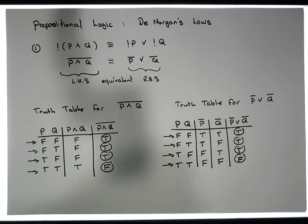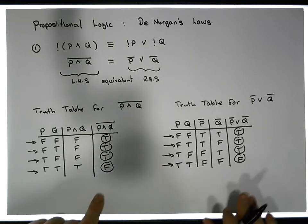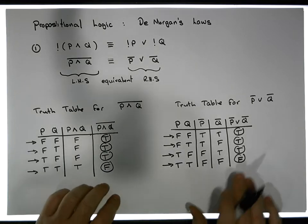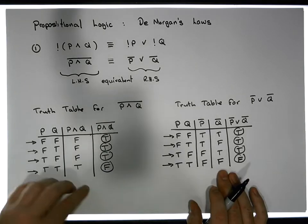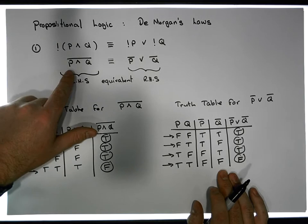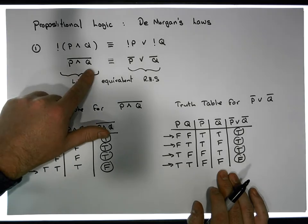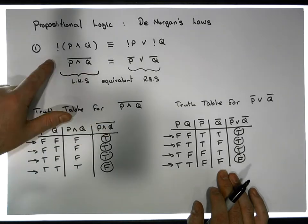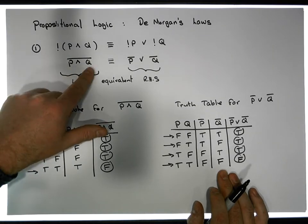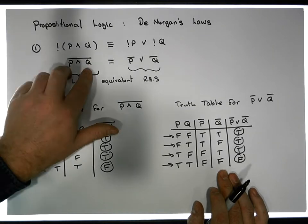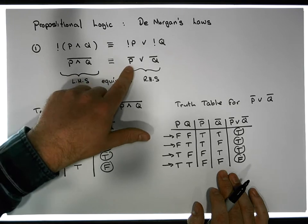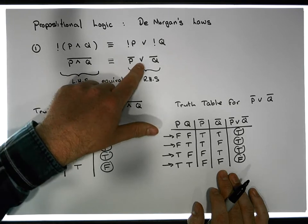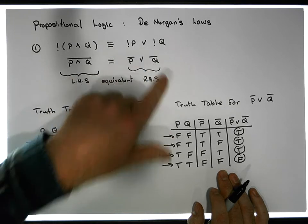What we've actually shown here through truth tables is that the negation of p-and-q is actually logically equivalent to the negation of p or with the negation of q.